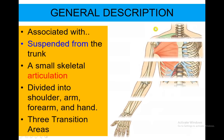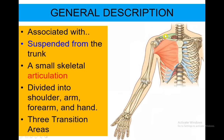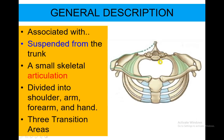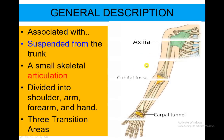Let's talk about the general description. The upper limb is associated with the neck and the thoracic wall, suspended from the trunk with a small skeletal articulation. It could be divided into the shoulder, arm, forearm, and the hand. We have three transition areas in the upper limb. The first transition area is the axilla, the second is the cubital fossa, and the third is the carpal tunnel.